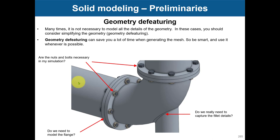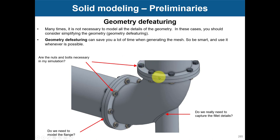Something else you should be aware of is geometry de-featuring. Most of the time, if somebody sends you an external geometry, you are going to get a lot of details that you need to remove. Because when you go into CFD, it's likely that you don't need to resolve all those details. For instance, see this pipe — you have knots, bolts, washers, and fillets. You can erase those, and that will decrease your mesh size because you can use larger cells.